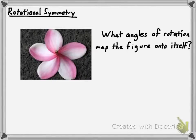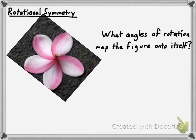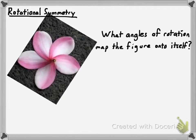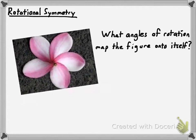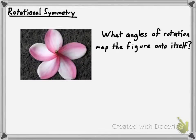Now watch what I do here with this flower. You see how it's rotated right now and it looks a certain way? If I rotated it right there, it looks just like it did a moment ago. If I rotate it again, it looks just like it did a moment ago. I could keep rotating around and get the figure to look exactly like it did at the beginning. That's what rotational symmetry is — it's when you can rotate a figure around its center 180 degrees or less and get it to map onto itself.